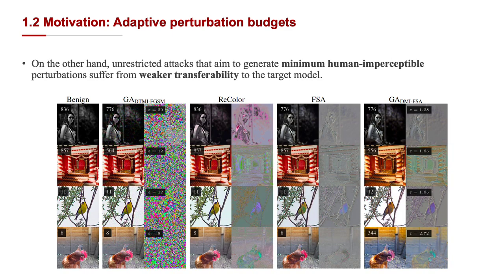On the other hand, unrestricted attacks that aim to generate minimum human imperceptible perturbations suffer from weaker transferability to the target model. In this figure, for each transfer-based adversarial example, we present the perturbation on its right. For each perturbation crafted through our method, we print its perturbation budget in the upper-left corner.